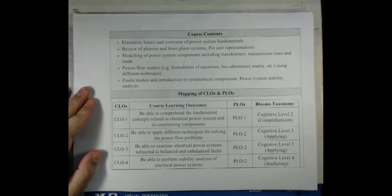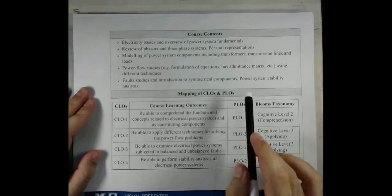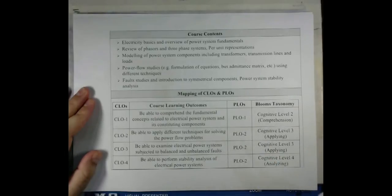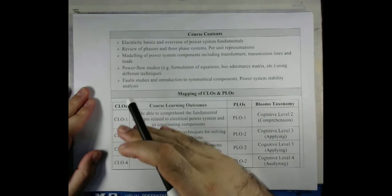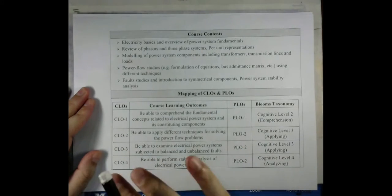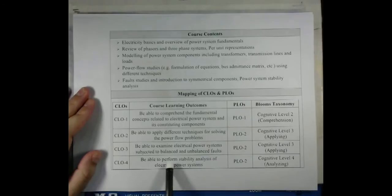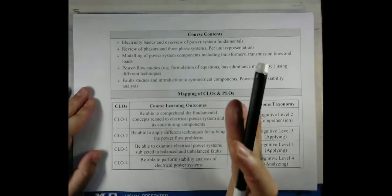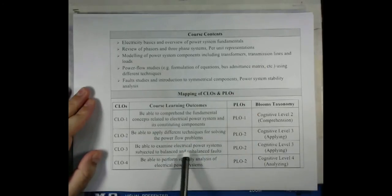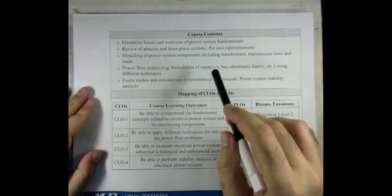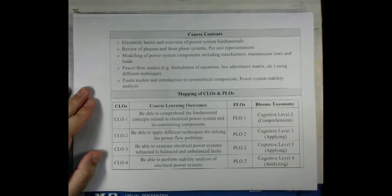We have covered all three course objectives. At this stage, with almost the whole course covered except the power system stability analysis, I can say we have successfully addressed the objectives. The last objective relates to stability analysis of electrical power systems. I will cover it in today's lecture and one more lecture, after which the course will end. Now let's start with the stability analysis.